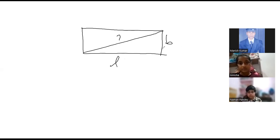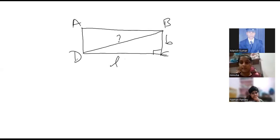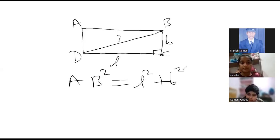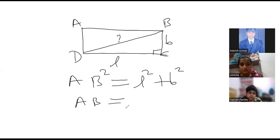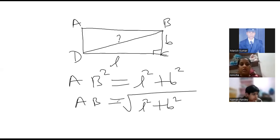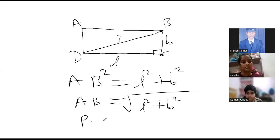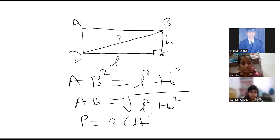Yes sir. So if this is suppose A, B, C, D, then we know that AB square will be equal to L square plus B square. Any doubt in this? No sir. So if you are asked to write the length of a diagonal of a rectangle, then it will come as root under L square plus B square, okay? And perimeter is already known — 2 into L plus B? Yes sir.